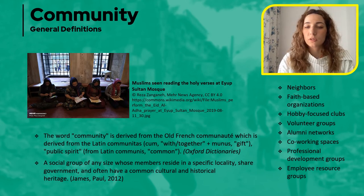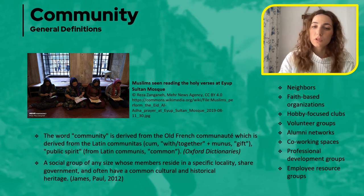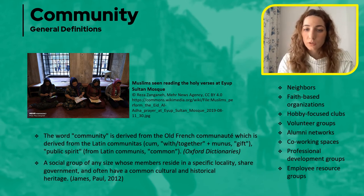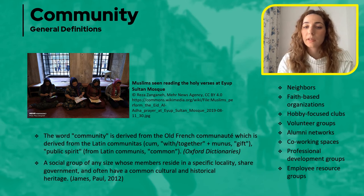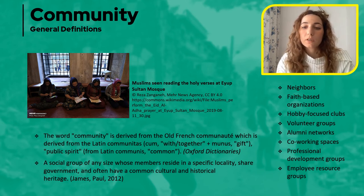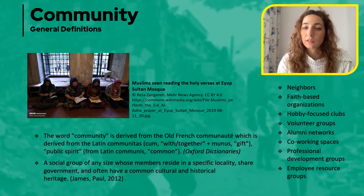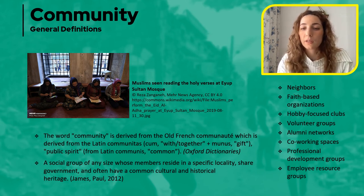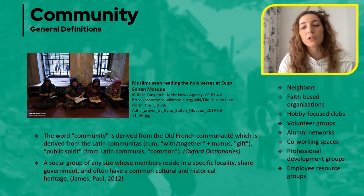Let's start with some definitions — general definitions regarding community and their position and role in the socio-economic and cultural chain. In one of the general definitions, a local community has been defined as a group of interacting people living in a common location. The word community is often used to refer to a group that is organized around common values, and it is attributed with social cohesion within a shared geographical location, generally in social units larger than a household.